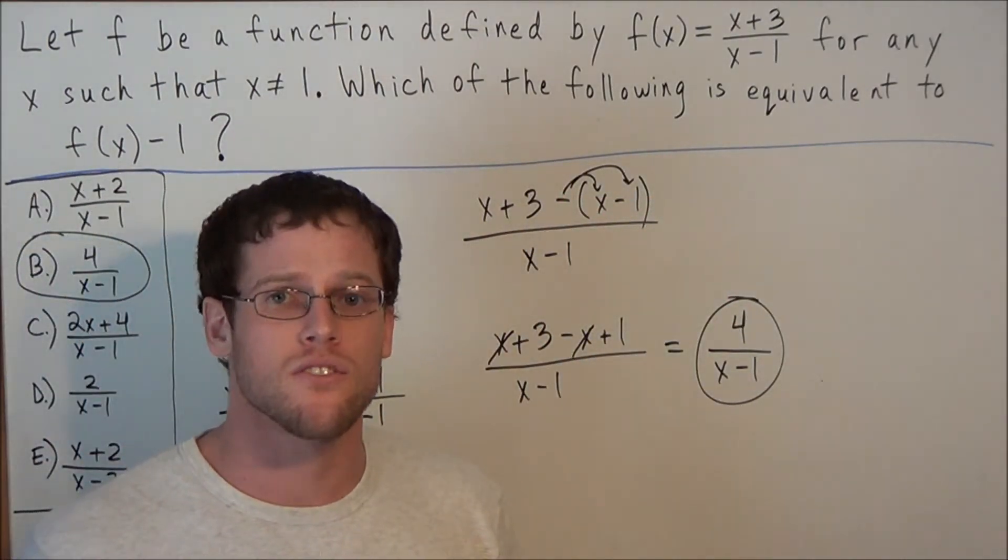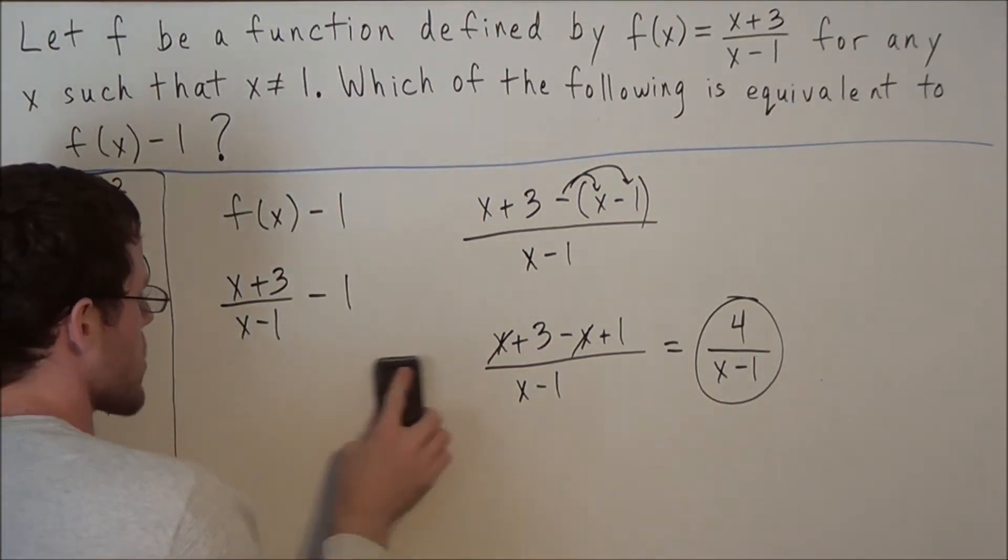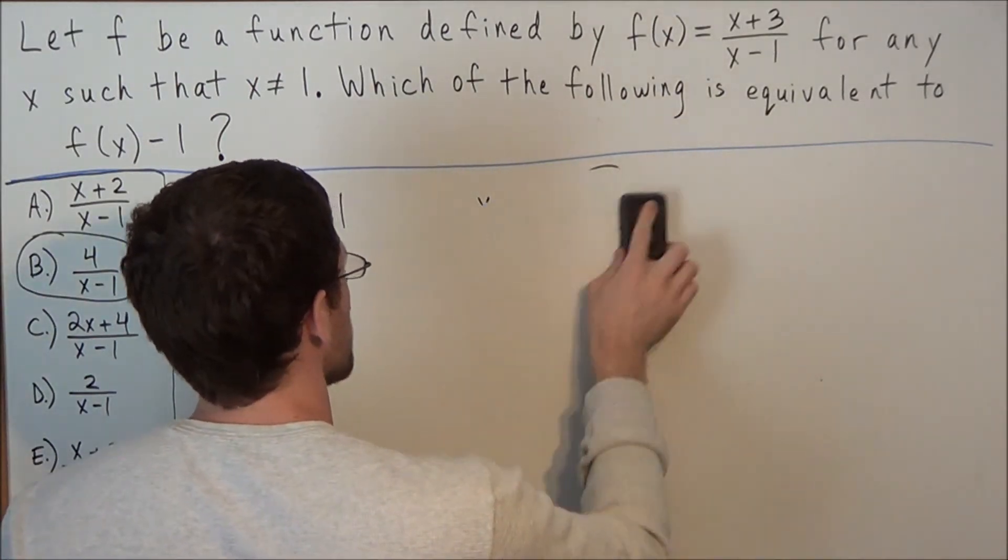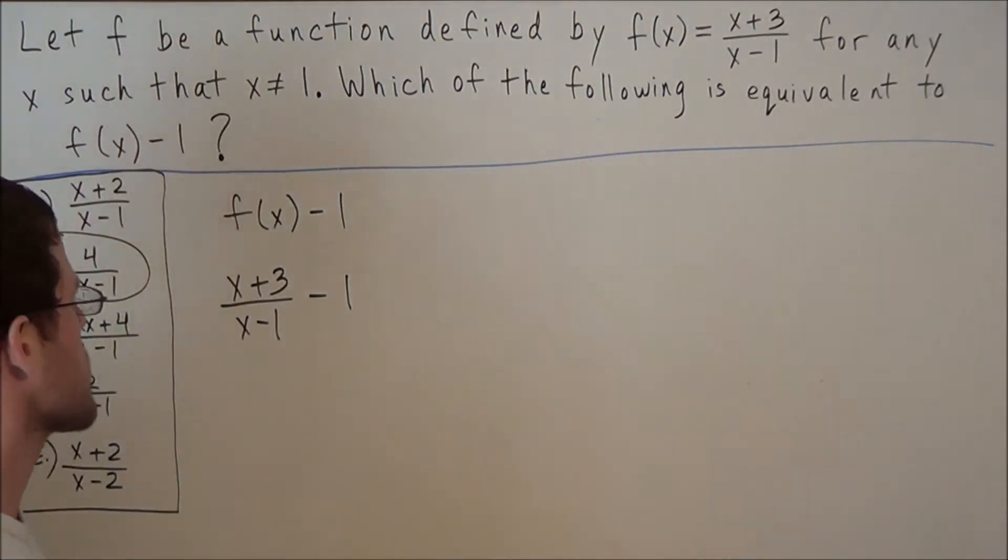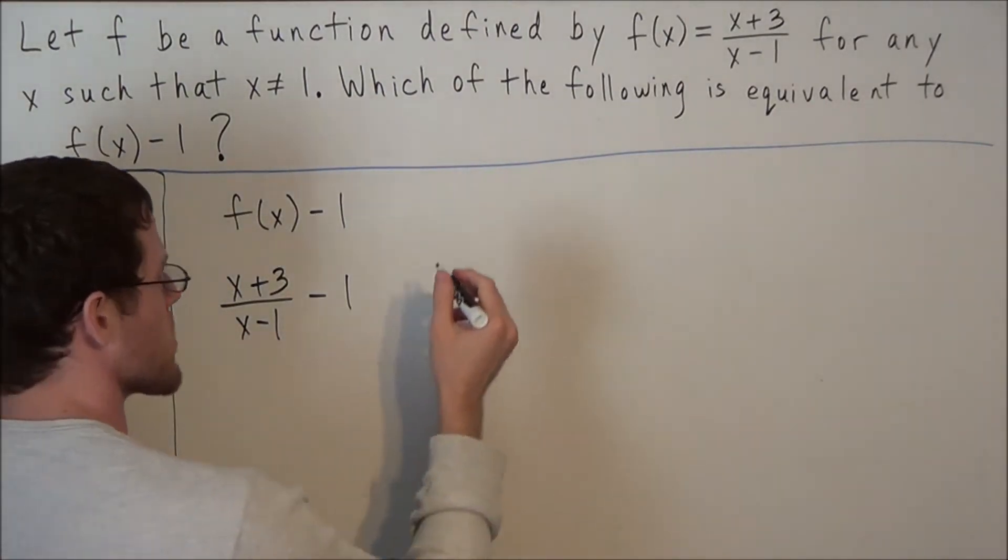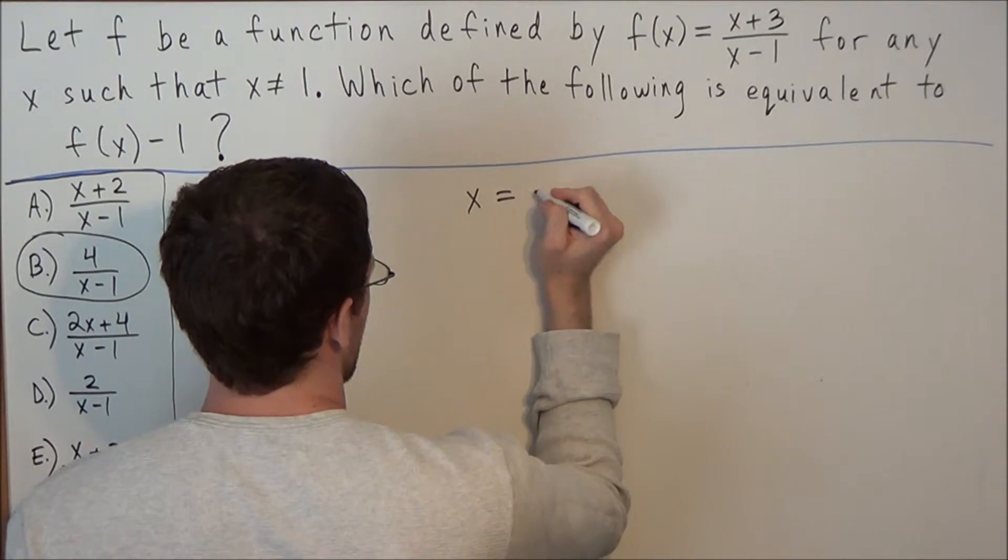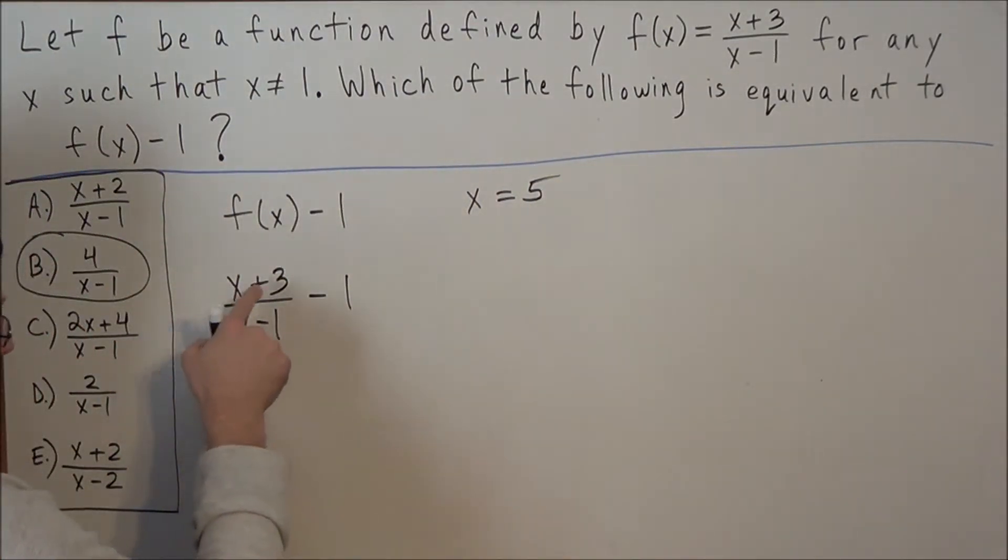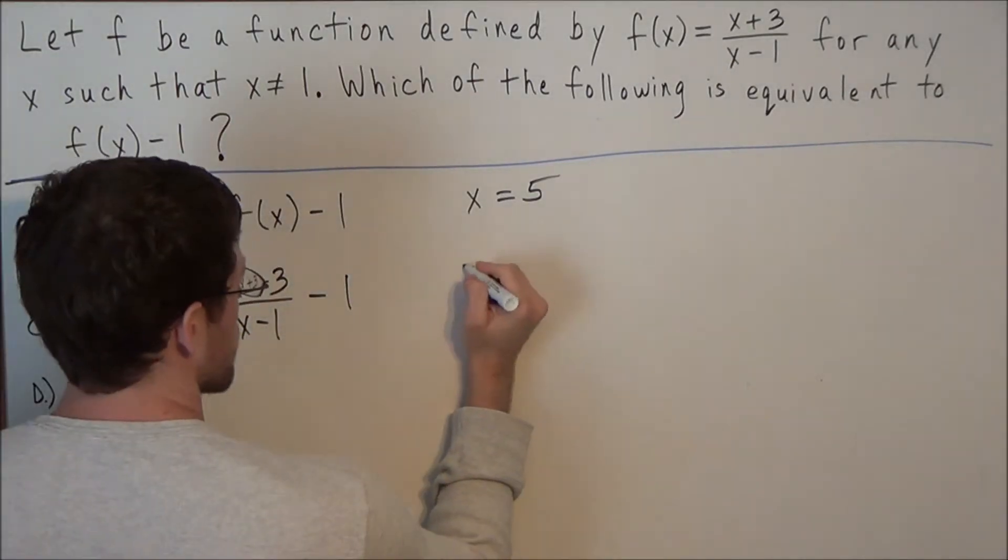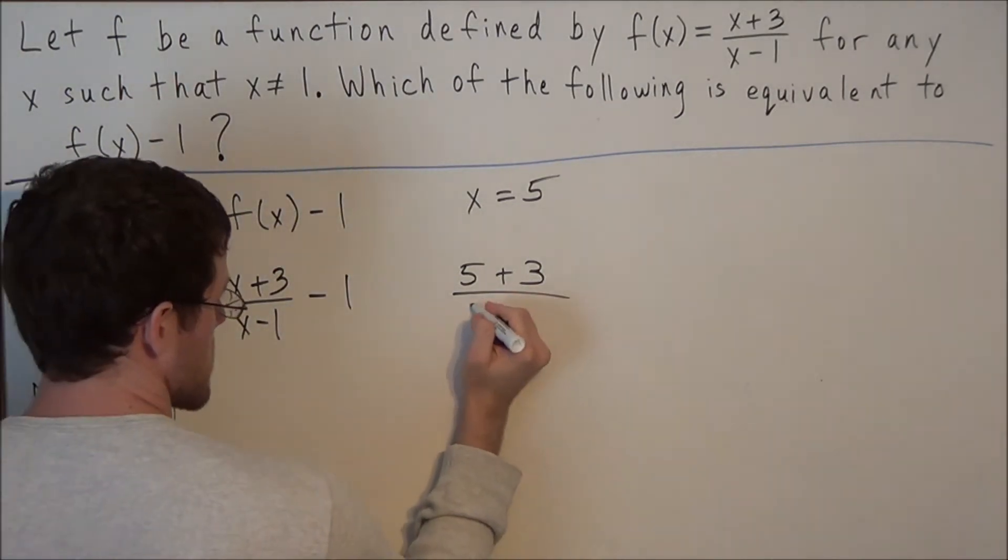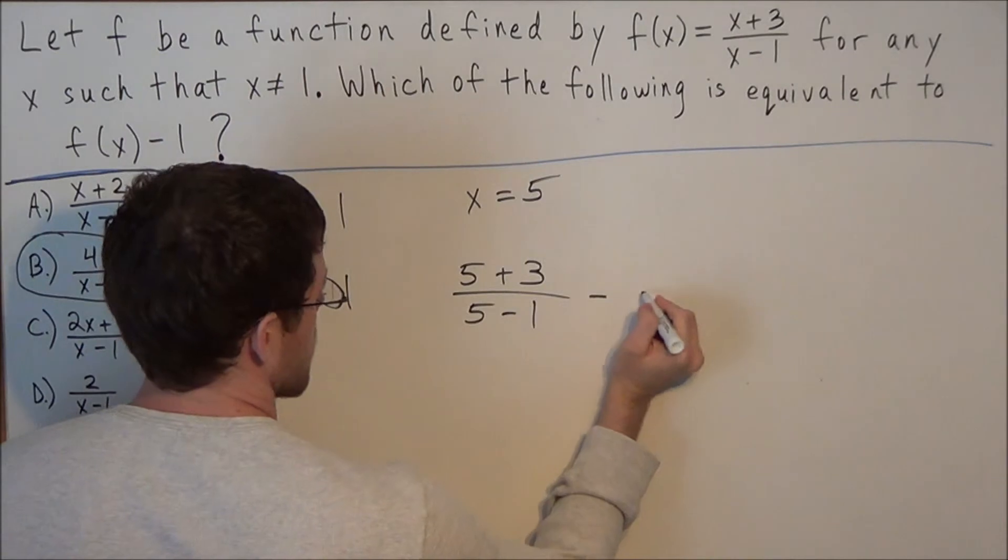But now let's look at a second solution. Let's say for some reason that we were stuck on the algebraic steps for how to find choice B. What we could do is set up the expression x plus 3 over x minus 1 minus 1. But if we were unsure at this step how to manipulate it to choice B, we could choose a random value of x. Let's say x equals 5. So now if we have x equals 5 and we plug into this expression, we would have 5 plus 3 over 5 minus 1 minus 1.